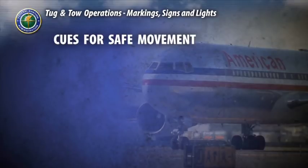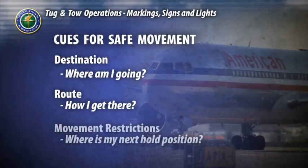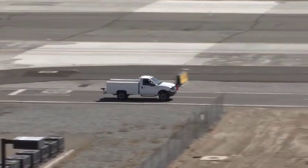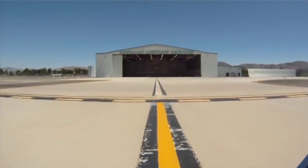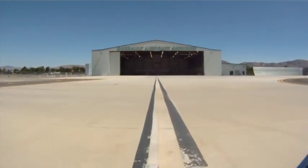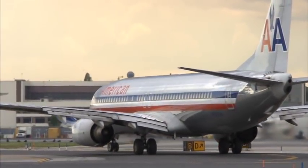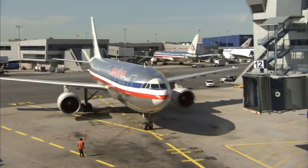Markings, signs and lights provide three critical clues for safe ground movement: your destination, your route, and any movement restrictions you will encounter. There are markings and signs to indicate ground travel lanes, aircraft movement and non-movement areas, runway and taxiway identifiers, traffic control signs, and safe area indicators.